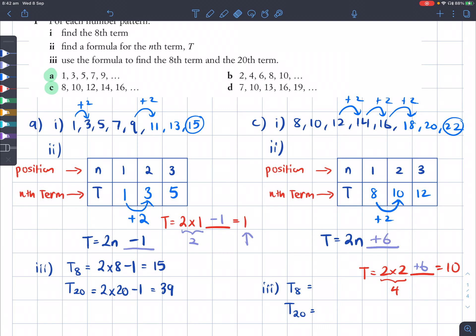So then if I substituted n as 1 into this formula, I should get 8, because 2 times 1 plus 6 is 8. Then if I do n as 3, then 2 times 3 plus 6 should give me 12, which is this number here. So this is indeed the right formula.